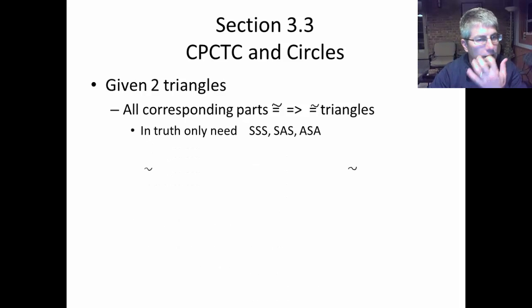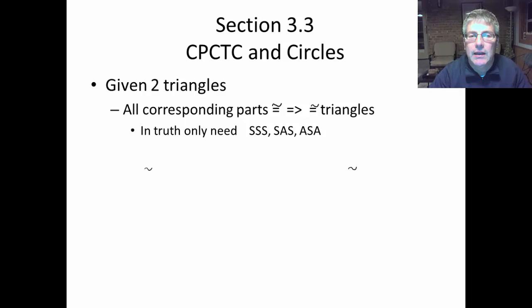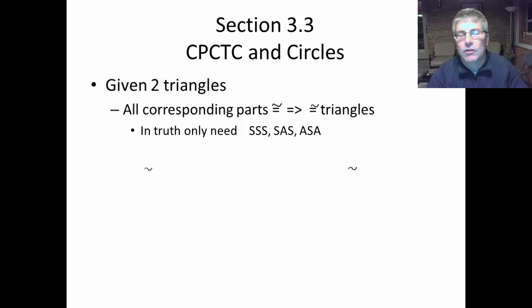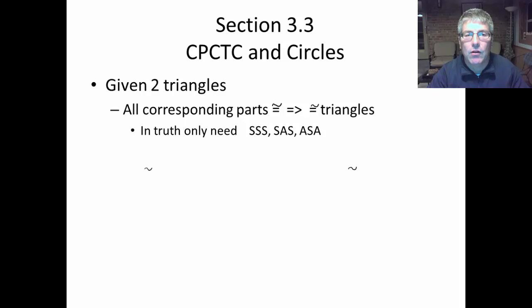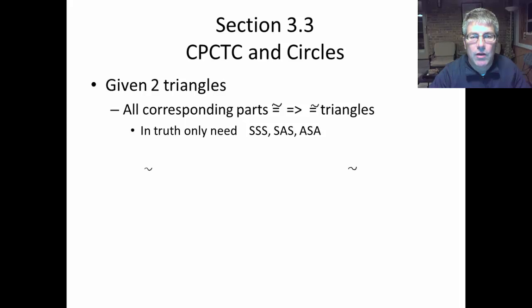But as we just studied, the truth is, for triangles we only need a particular set of corresponding parts. So side-side-side, side-angle-side, and angle-side-angle — that's all we really needed to prove that we have congruent triangles.